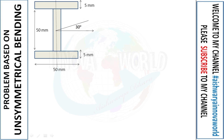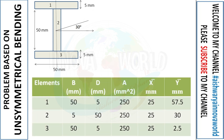Our first step is to split the I-section into elements: section one, section two, and section three. After splitting, we form a table listing for each element: b, d, area, x̄, and ȳ — where x̄ and ȳ represent the individual centroid point for each element. Element one has b = 50 and d = 5; element two has b = 5 and d = 50; element three has b = 50 and d = 5.